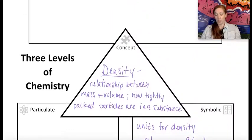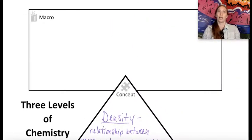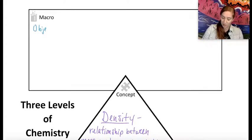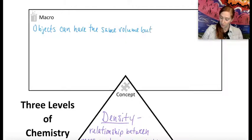Let's hop up to macroscopic and think about what density information we can kind of consider when we are interacting with matter as a human being. So first thing we want to say is that objects can have the same volume, but different masses.